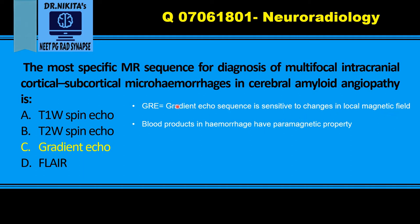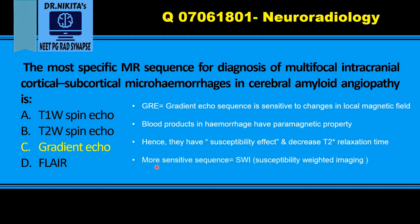Hence, gradient echo can detect those changes and is useful in hemorrhage. These blood products have a susceptibility effect because they are paramagnetic. Susceptibility effect means they change the local magnetic field and hence decrease what is called T2 star relaxation time. If there is a decrease in T2 star relaxation time, gradient echo shows that area as black. So hemorrhage will be black on a GRE. The more sensitive sequence for hemorrhage, more sensitive than GRE, is SWI — that is susceptibility weighted imaging.